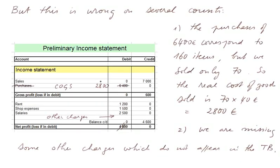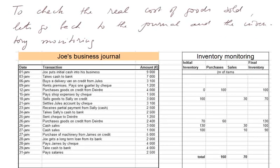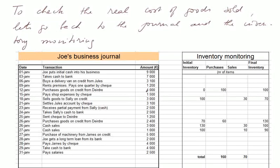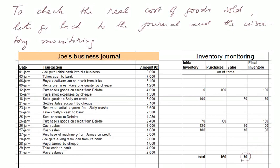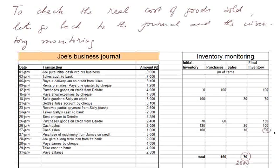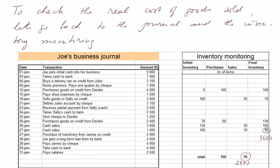Let's look in more detail at this cost of goods sold. While we kept the journal, we also monitored the inventory. We purchased first 100 items at 40 euros apiece — that's 4,000. Then we sold 30, leaving an inventory of 70. Then we purchased another 60 for 2,400, and then sold 30 and then 10 more. Altogether we sold 70 items, generating sales of 7,000. But the cost of those items to us was 2,800, and we were left with 90 unsold items that cost us 3,600 — which will end up in inventories.